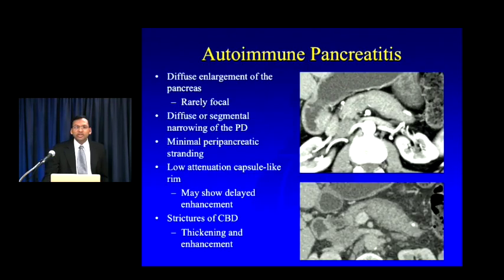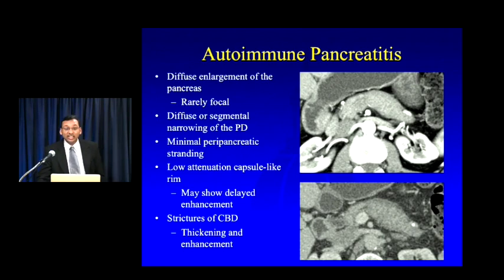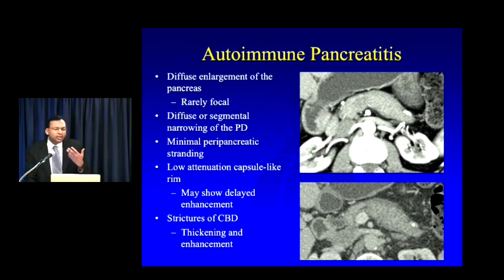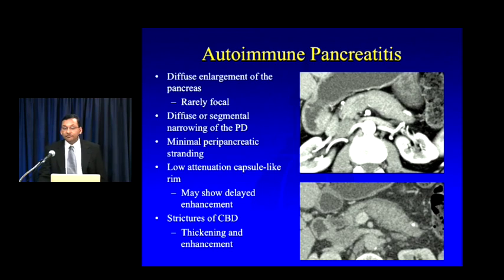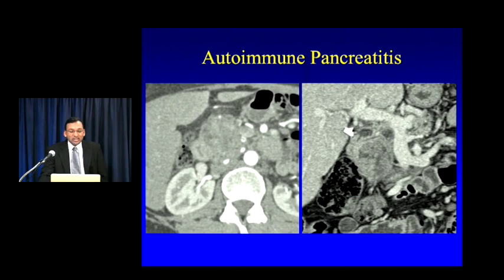Another increasingly recognized diagnosis is autoimmune pancreatitis. Usually it diffusely involves the pancreas — diffusely enlarged pancreas, a low-attenuation halo, possible delayed enhancement of that halo, and often associated autoimmune IgG4-related cholangitis with strictures of the CBD and thickening/enhancement of the distal CBD at the level of the ampulla. The problem is that autoimmune pancreatitis can rarely be focal — especially involving the head — and can look very much like pancreatic cancer. Here's an example: a mass in the pancreatic head not obstructing the pancreatic or common bile duct, which should raise suspicion it's not adenocarcinoma, but focal autoimmune pancreatitis can be virtually impossible to exclude underlying malignancy.